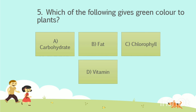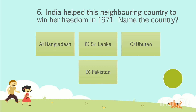The answer is Option C: Chlorophyll. Question number 6. India helped this neighboring country to win her freedom in 1971. Name the country. Option A: Bangladesh. Option B: Sri Lanka. Option C: Bhutan. Option D: Pakistan. Your time starts now.